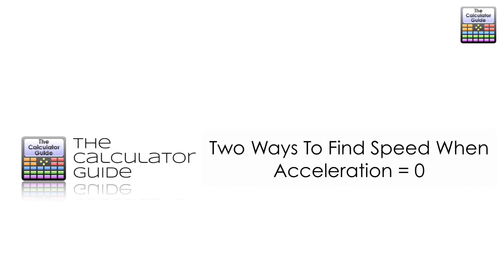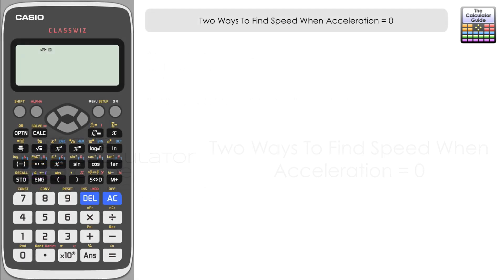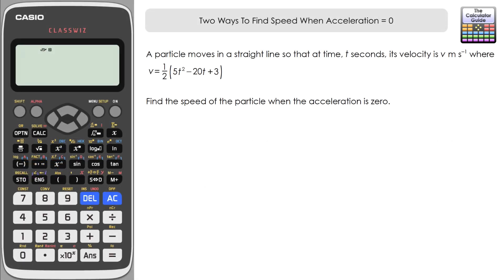Hello and welcome to the calculator guide video on two ways to find speed when acceleration equals zero. We're going to look at using both the derivative feature with solve to answer this question, as well as using the polynomial function in the equation function mode on the calculator.